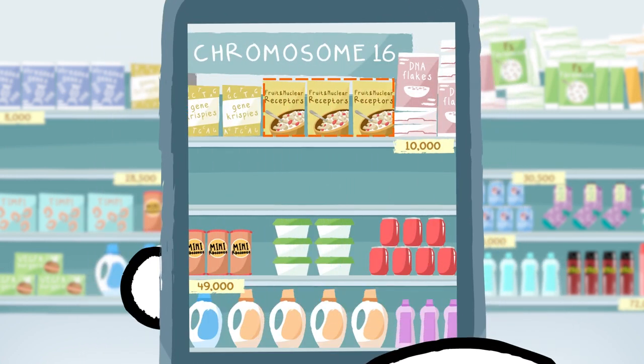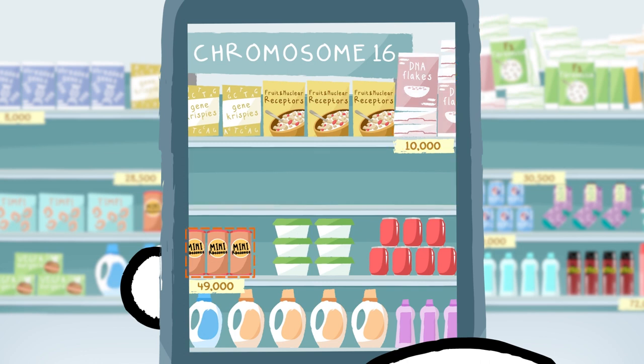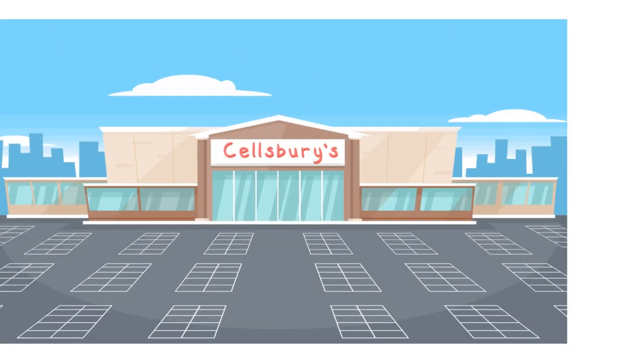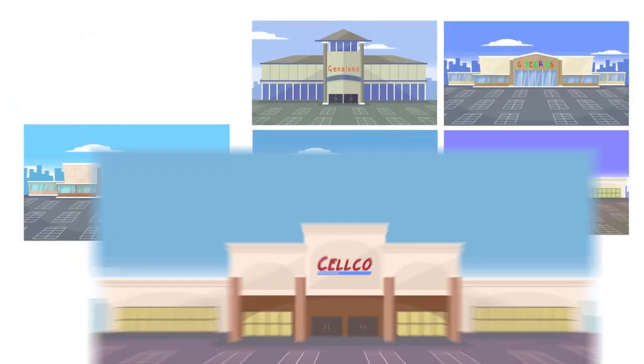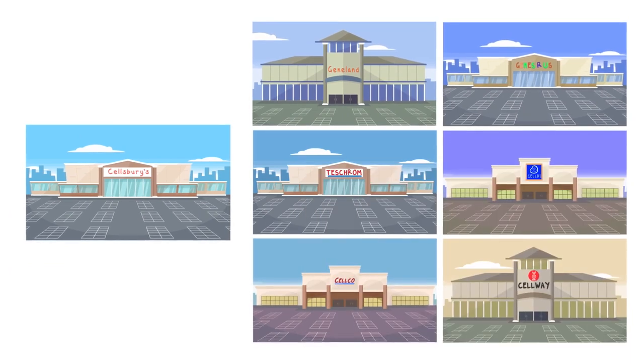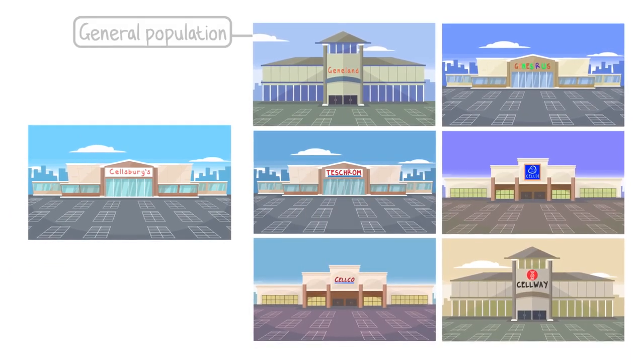For each section of each shelf, a scientist compares the number of products they see to what they have seen across the supermarkets of a large number of people in the general population.